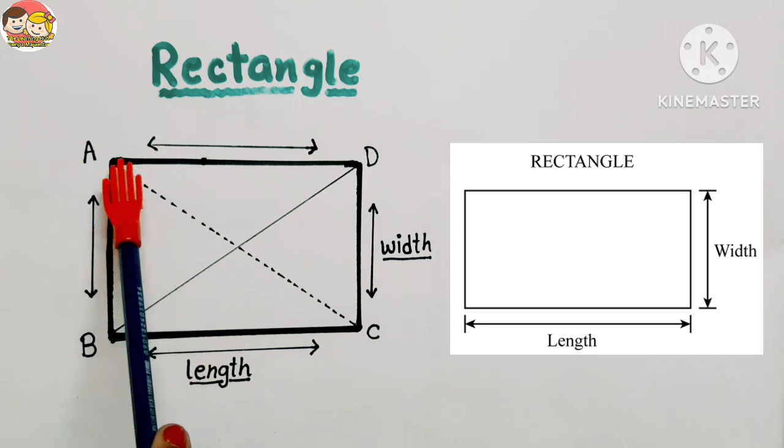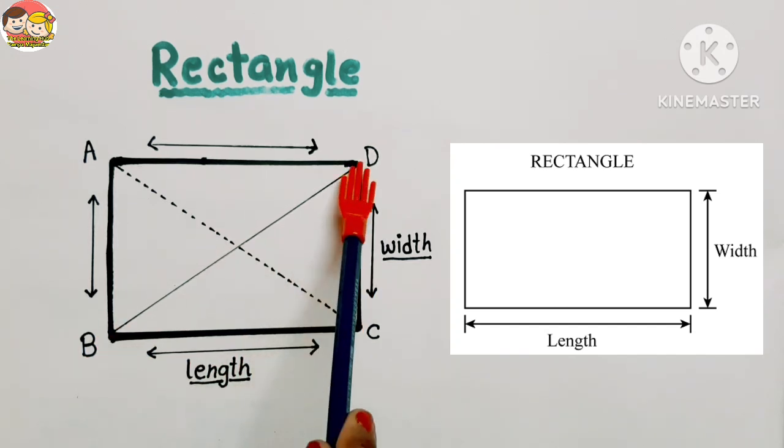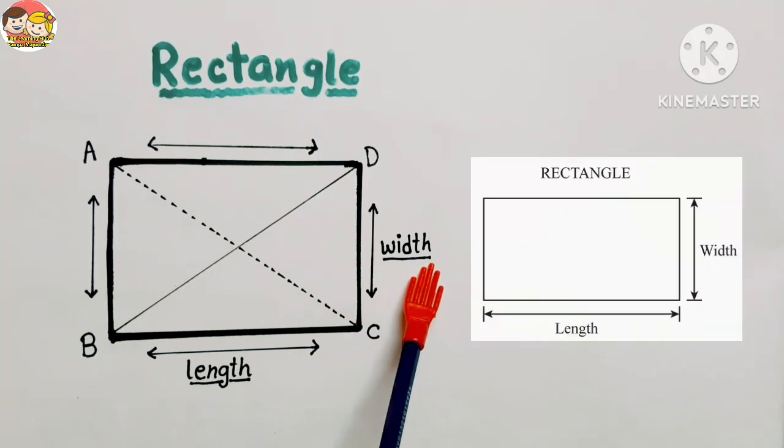It has four sides, but the opposite sides are equal. The longer side of the rectangle is called length, and the shorter side of the rectangle is called width.